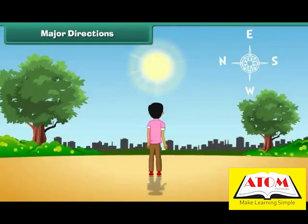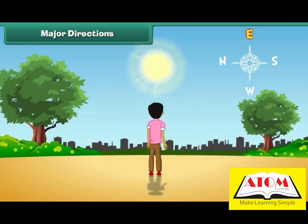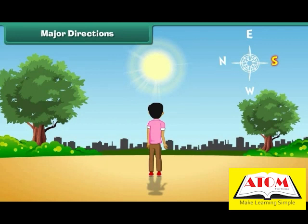This is J. He is standing facing the sun. The sun rises in the east. Therefore, east is in front of him. It means west is behind him. North is to his left, and south is to his right.